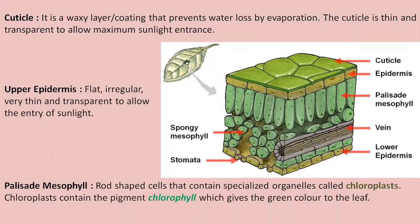Next we have the layer known as palisade mesophyll. Here the cells are rod-shaped and contain specialized organelles called chloroplasts. Chloroplasts contain the pigment chlorophyll, which gives the leaf its green color. Each cell of the palisade mesophyll contains a number of chloroplasts, and the chlorophyll pigment inside these chloroplasts absorbs sunlight, providing the necessary energy for photosynthesis.